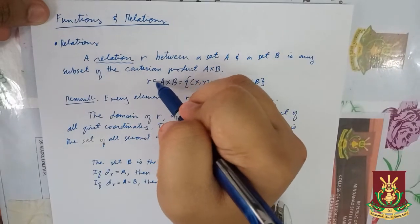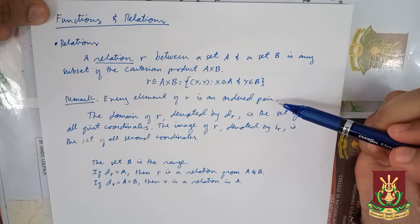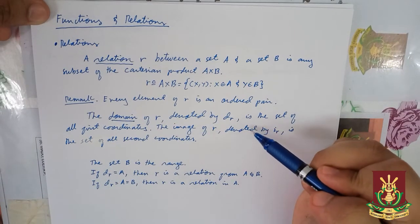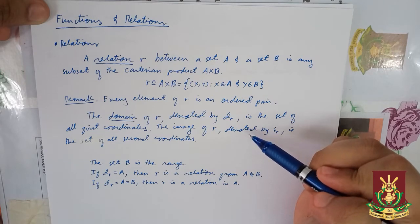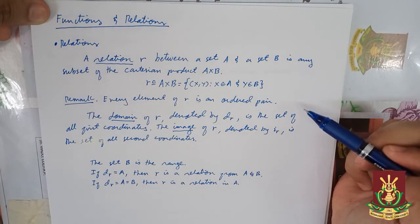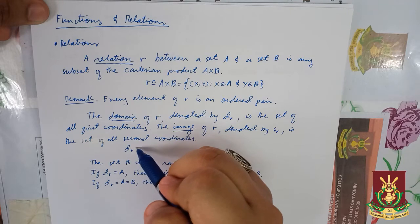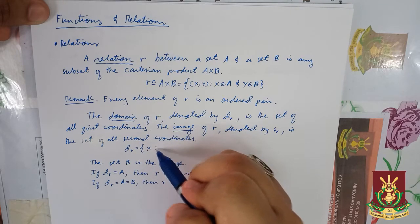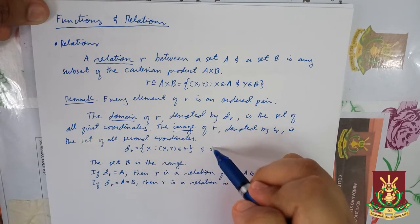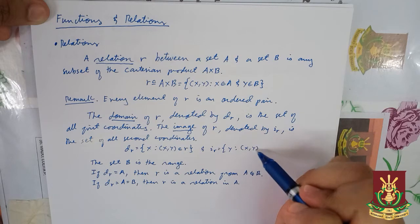Because R is a subset of A × B, then every element of R is an ordered pair. Moreover, we define the domain of R, denoted by D sub R, to be the set of all first coordinates. On the other hand, the image of R, denoted by I sub R, is the set of all second coordinates. Using set notation, we can write D sub R as the set of all X such that the ordered pair (X, Y) is in R, while the image I sub R equals the set of all Y such that the ordered pair (X, Y) is also in R.